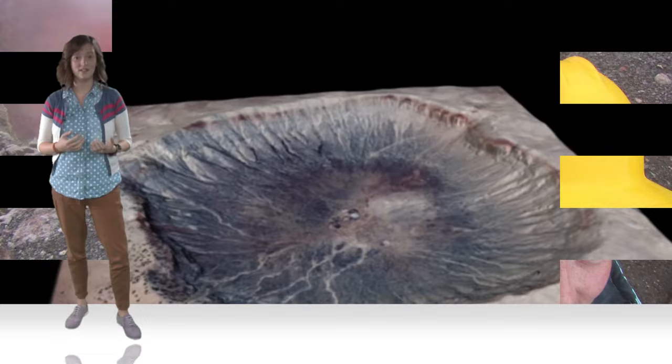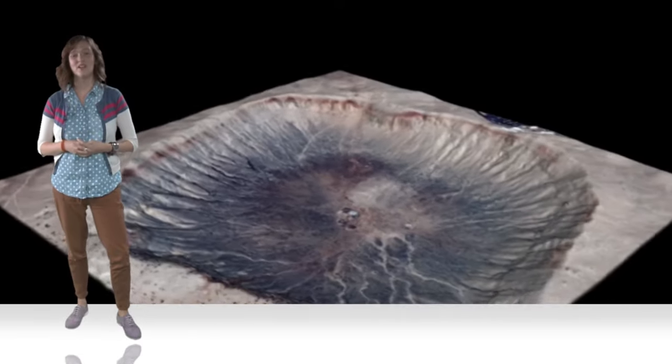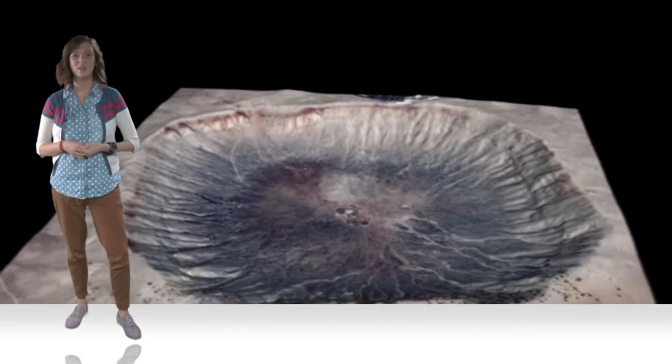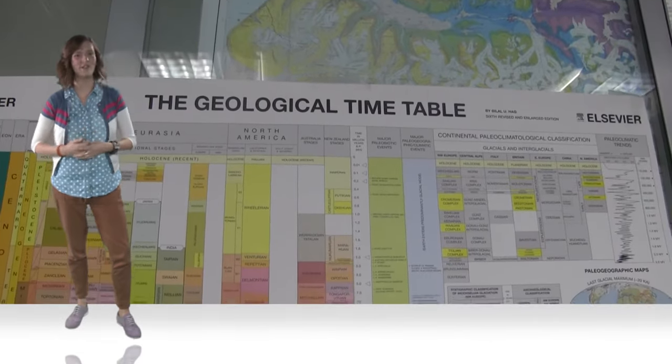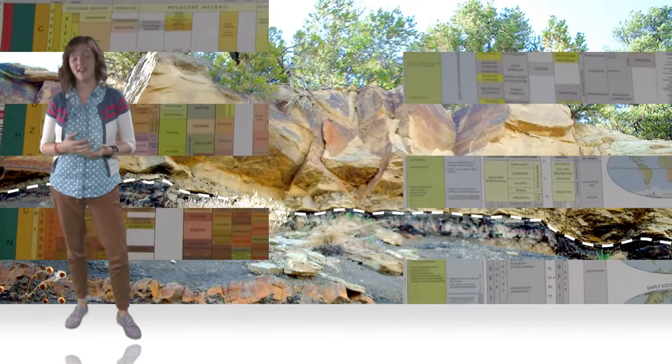You will learn about mass extinctions that wiped out more than 95% of all species about 250 million years ago. And yes, you will also learn about dinosaurs, meteorites and the KT boundary.